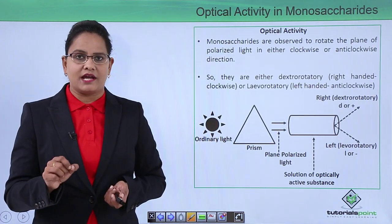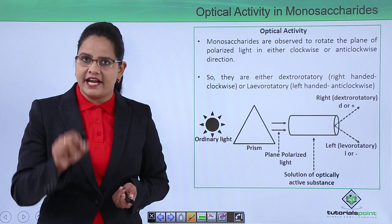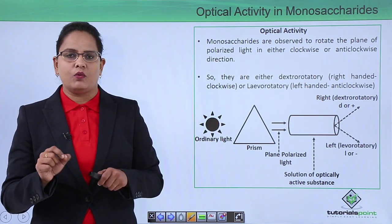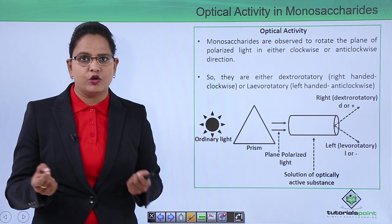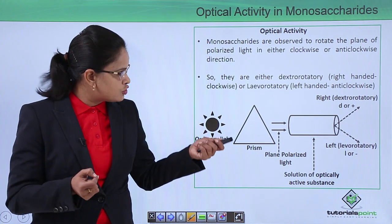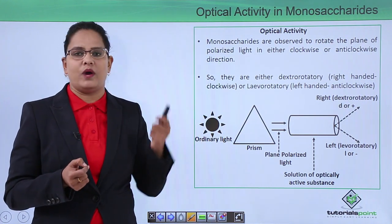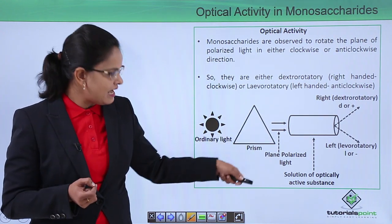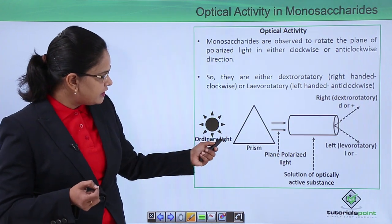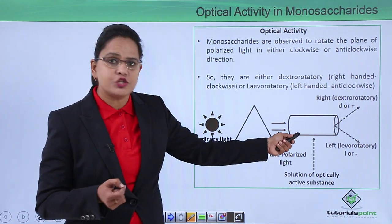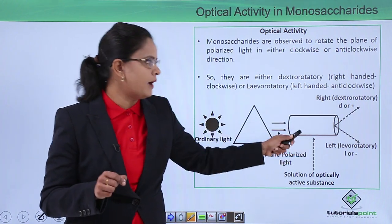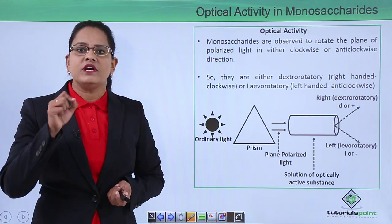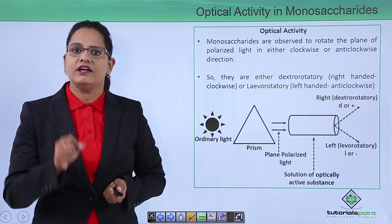Optical activity in monosaccharides: monosaccharides have a tendency to rotate the plane of polarized light either clockwise or anticlockwise. On the basis of the type of rotation, they are called dextrorotatory — rotating clockwise or in the right-hand direction — or levorotatory, meaning rotating the plane of polarized light to the left-hand side. If we pass ordinary light through a prism to a solution of an optically active substance, we get dextrorotatory and levorotatory compounds. Optical activity is also exhibited by monosaccharides as they have an asymmetric carbon.